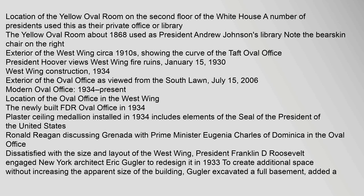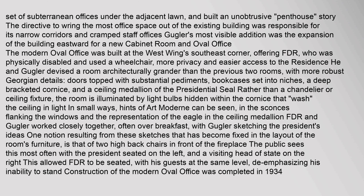The newly built FDR Oval Office was completed in 1934. Dissatisfied with the size and layout of the West Wing, President Franklin D. Roosevelt engaged New York architect Eric Gugler to redesign it in 1933. To create additional space without increasing the apparent size of the building, Gugler excavated a full basement, added a set of subterranean offices under the adjacent lawn, and built an unobtrusive story. Gugler's most visible addition was the expansion of the building eastward for a new cabinet room and oval office. The modern Oval Office was built at the West Wing's southeast corner, offering FDR — who was physically disabled and used a wheelchair — more privacy and easier access to the residence.